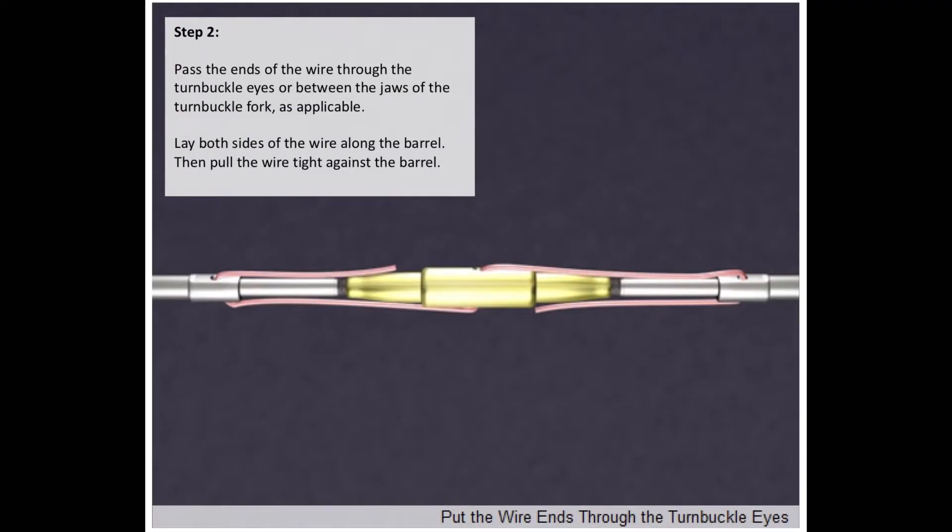Step 2: Pass the ends of the wire through the turnbuckle eyes or between the jaws of the turnbuckle fork as applicable. Lay both sides of the wire along the barrel and then pull the wire tight against the barrel.